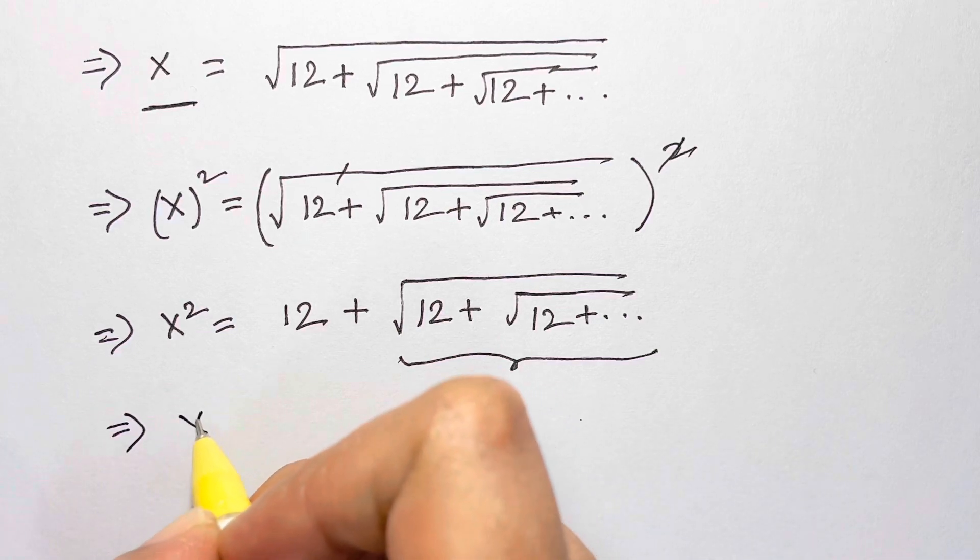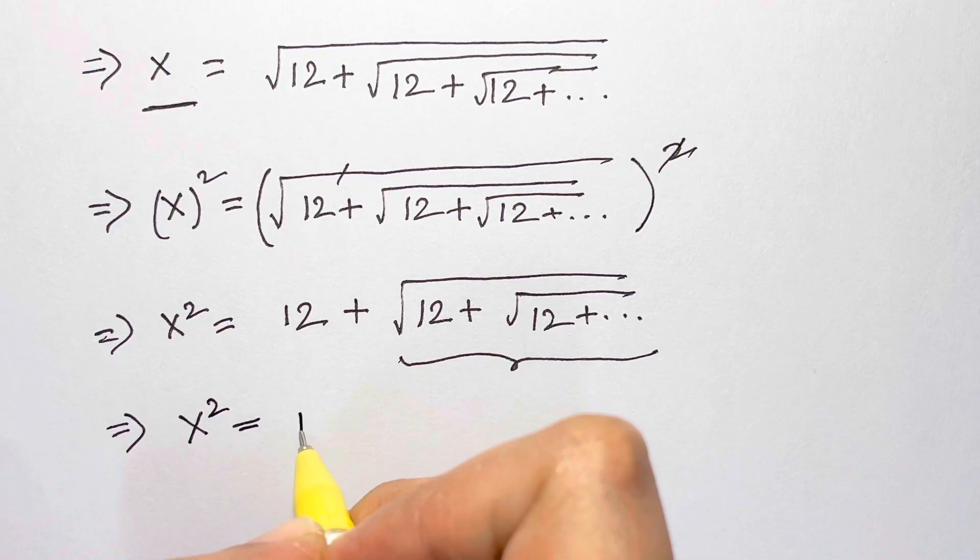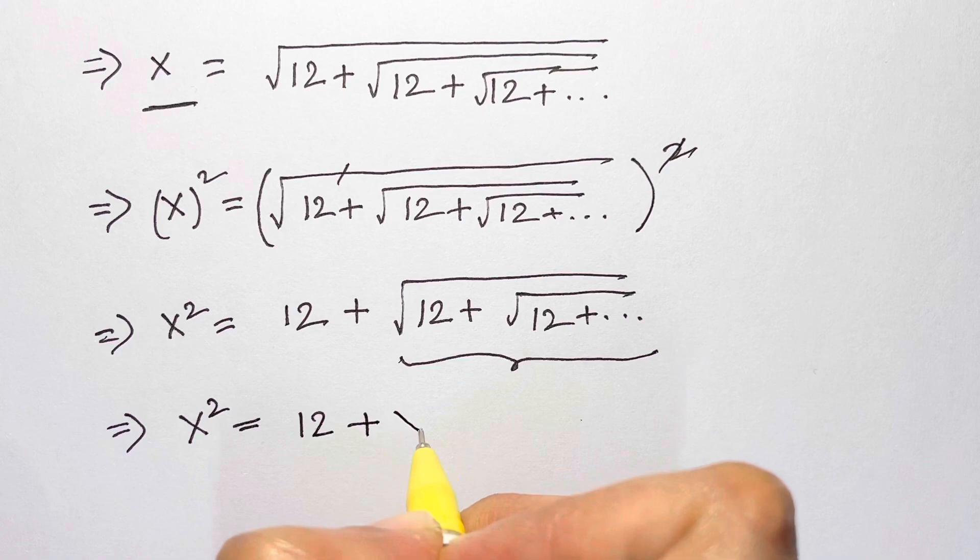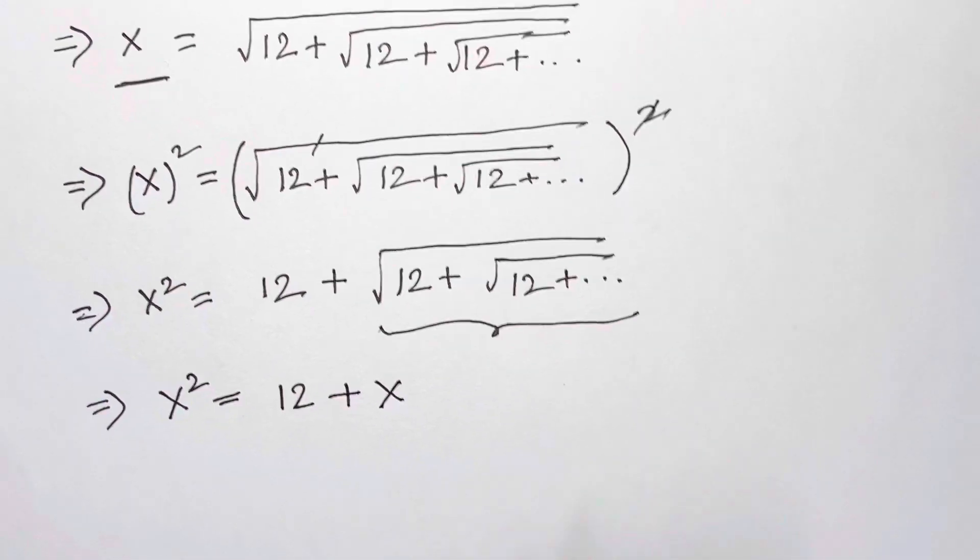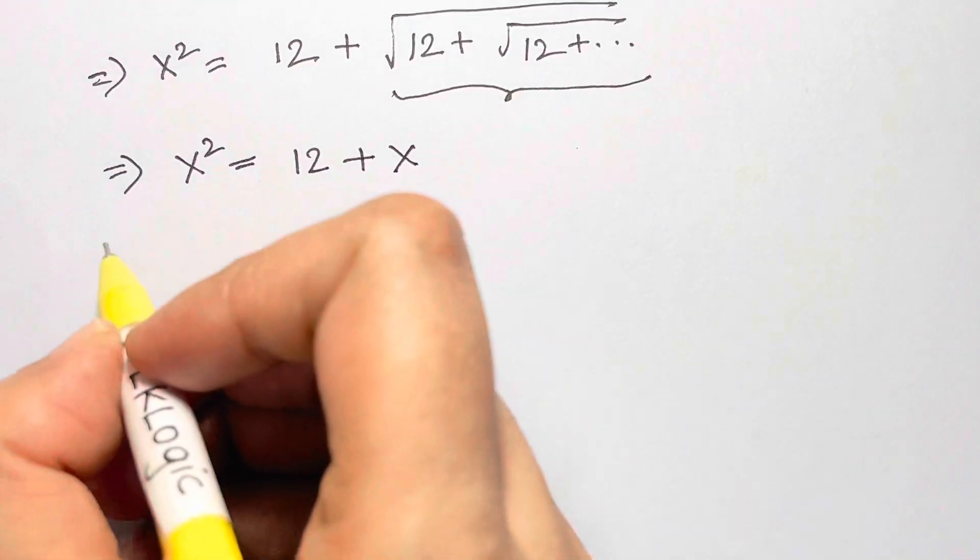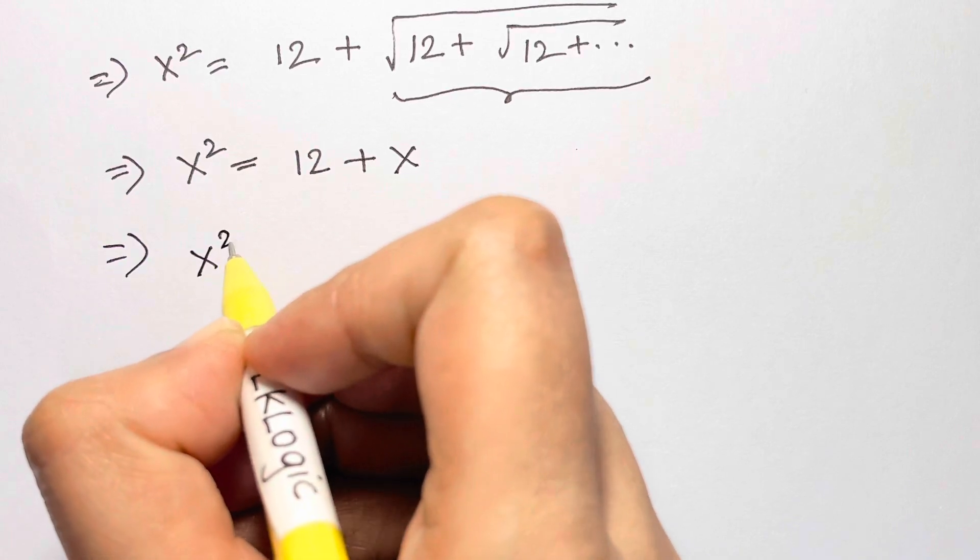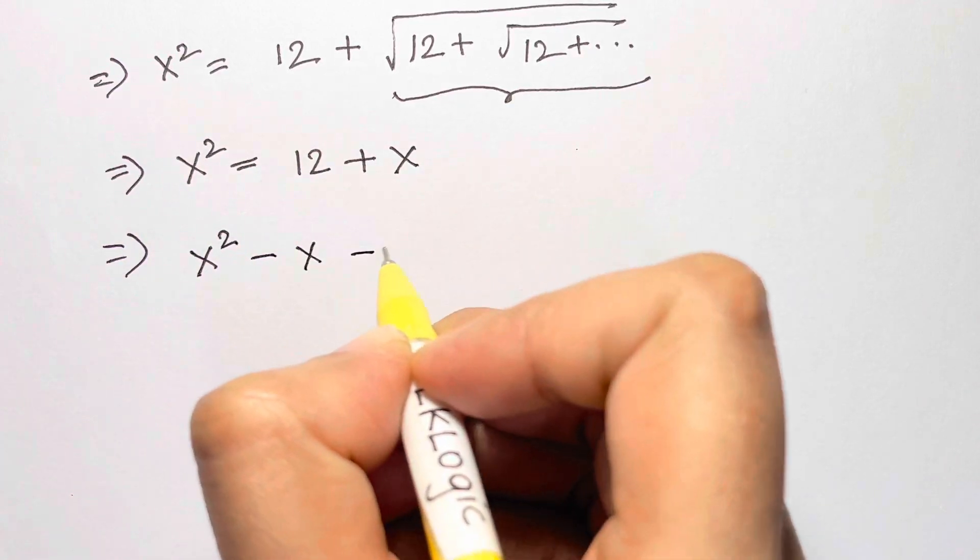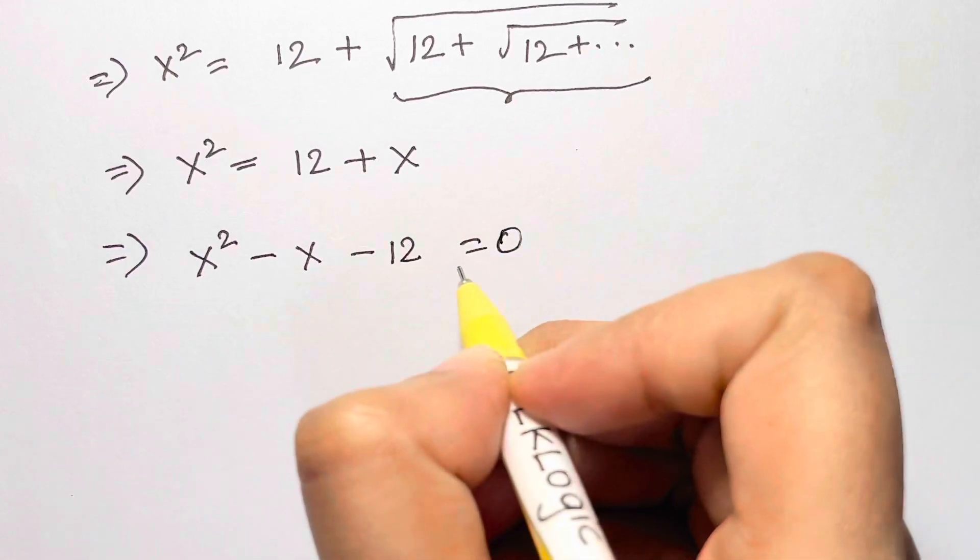So now let's substitute it back. x squared is equal to 12 plus x. Now bring all the terms to one side. We get x squared minus x minus 12 is equal to zero.